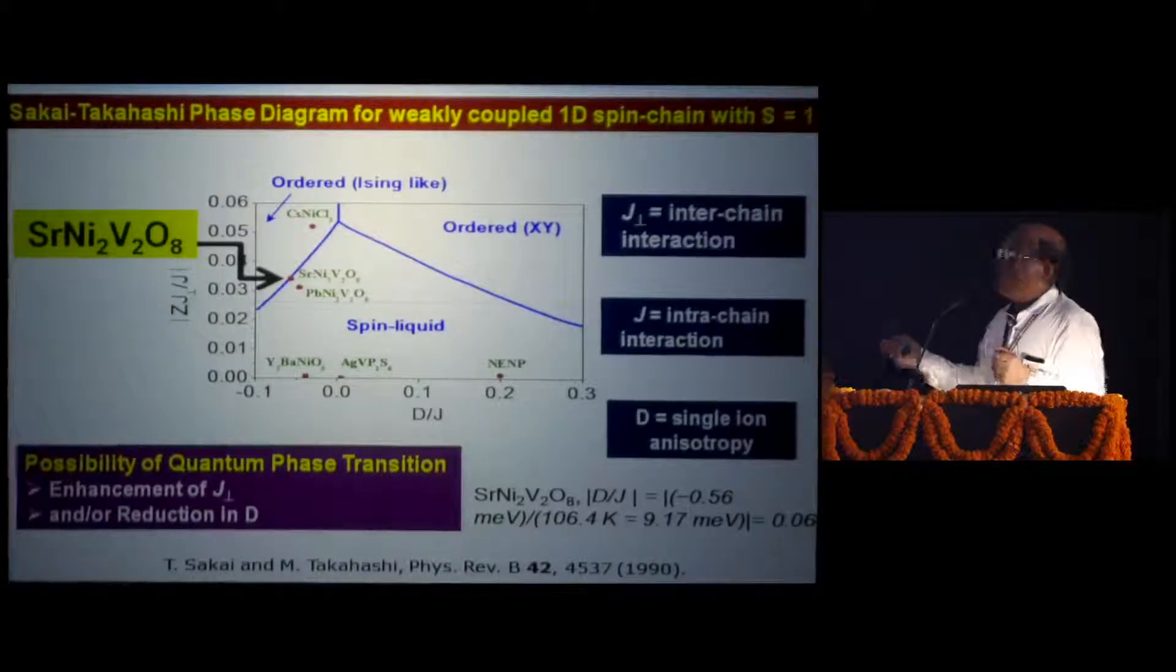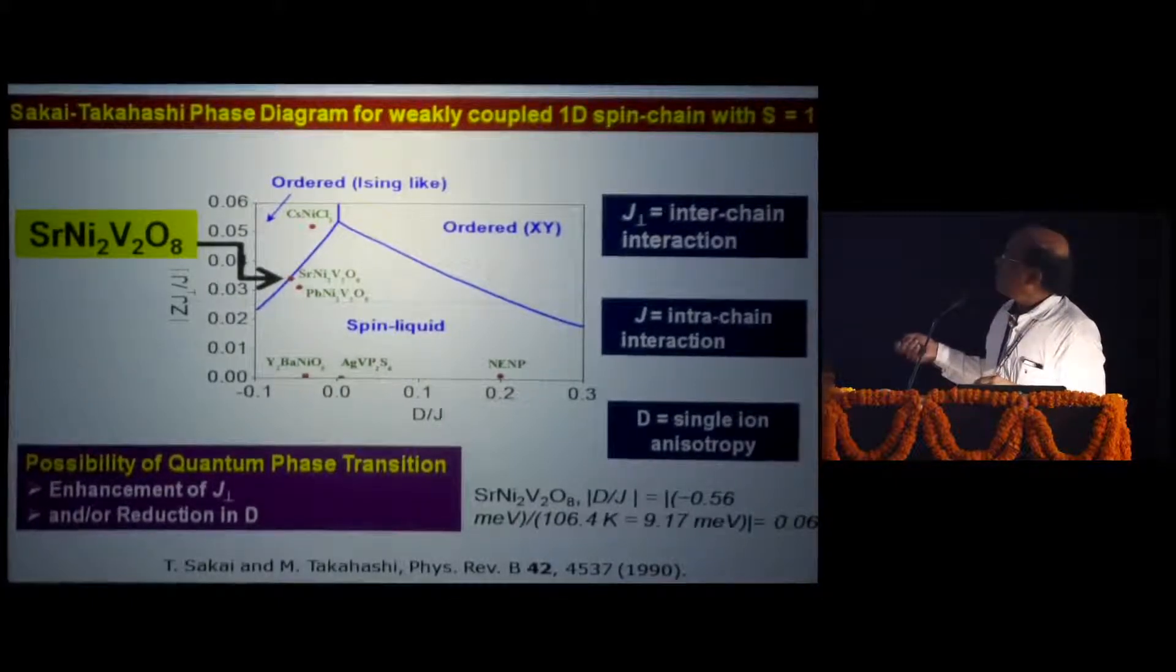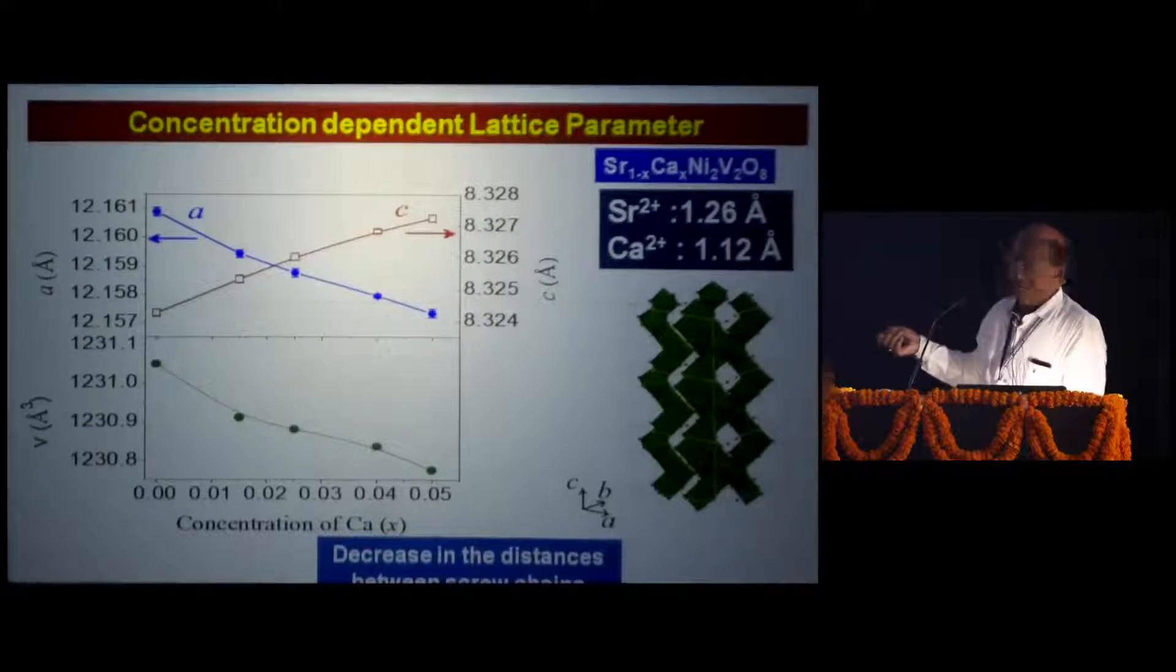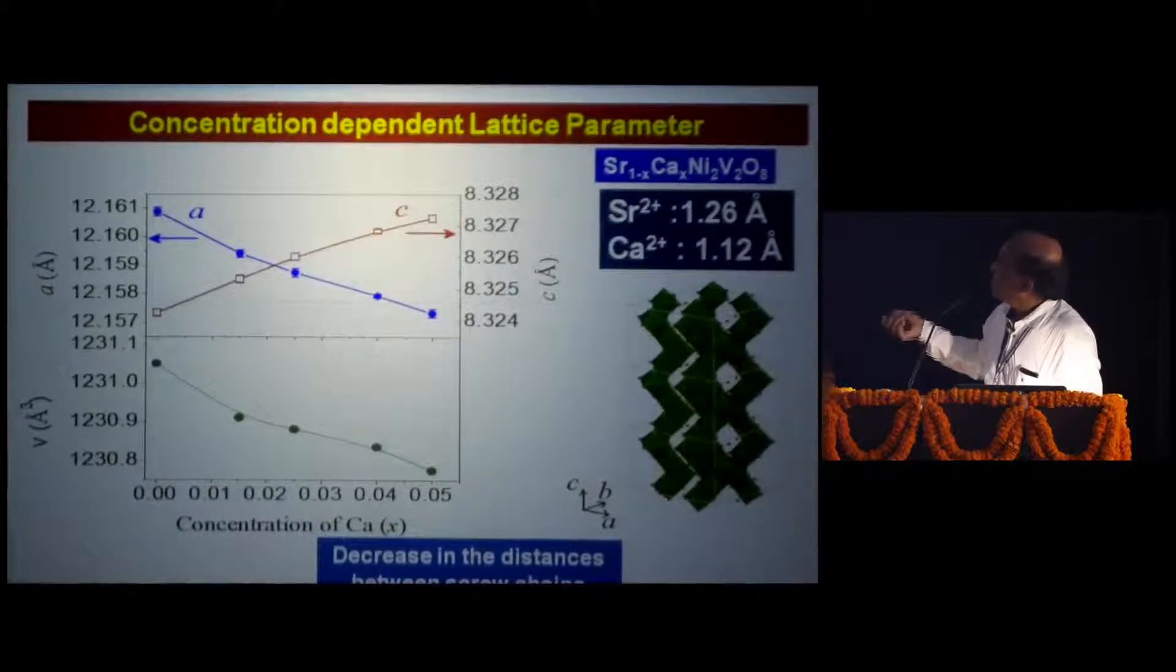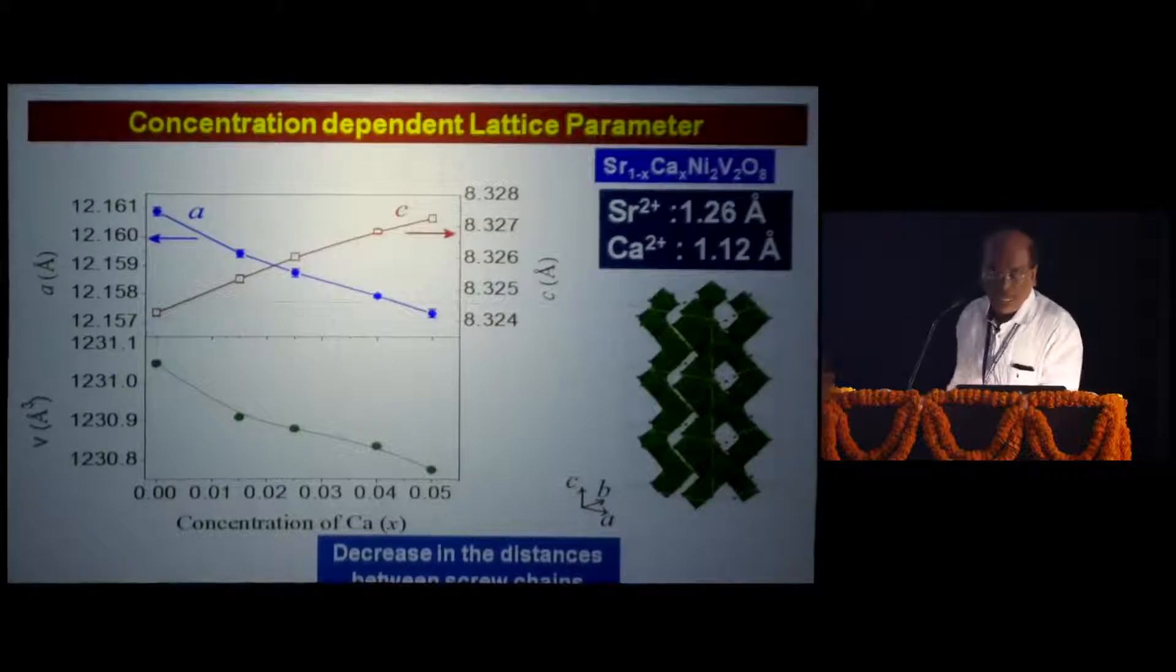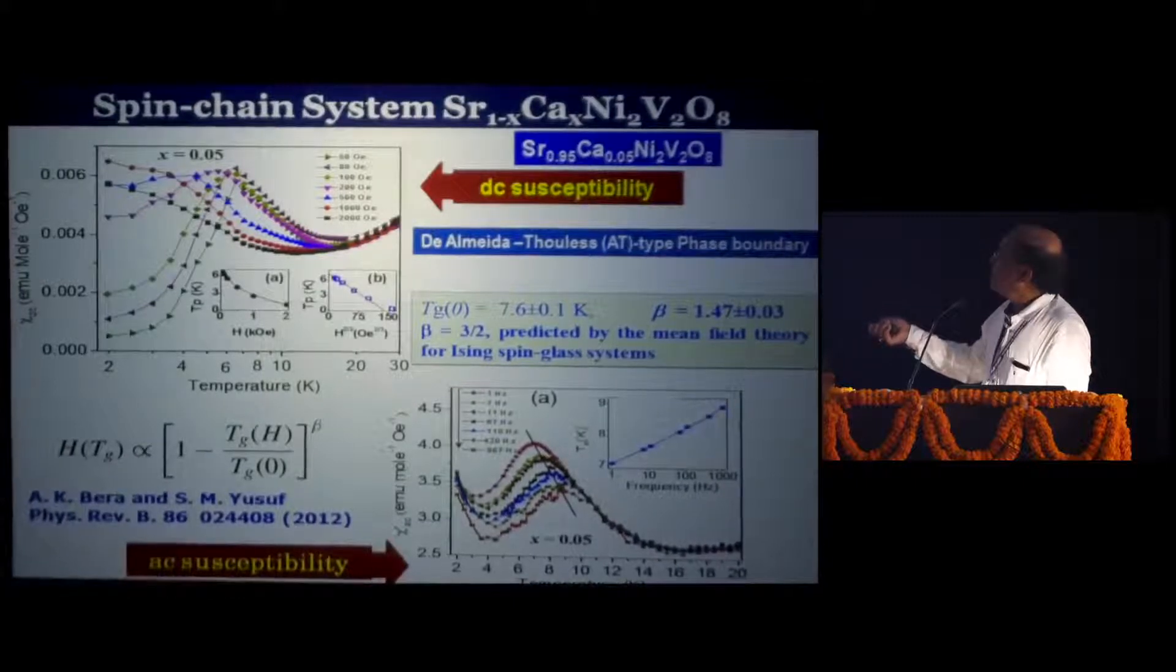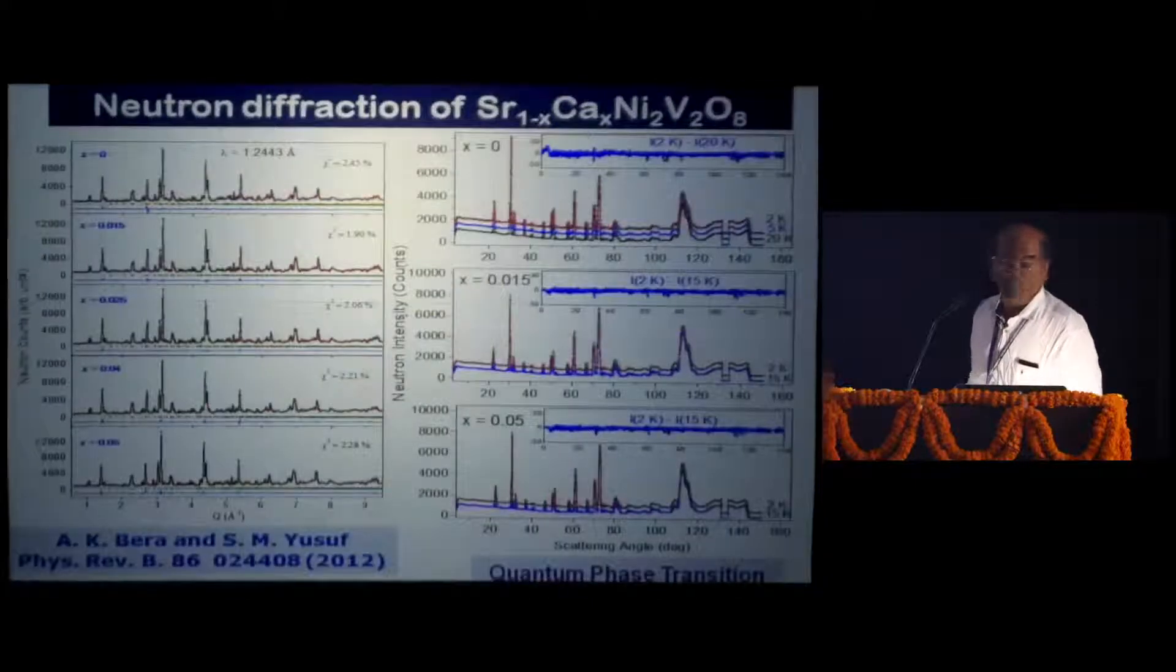Because this system, it was already given in this phase diagram, our system is in the spin liquid state but very close to this phase boundary line. Our intention was to move the system from this spin liquid state to the ordered state by some external perturbation. In this case, what is the perturbation we introduced? We replaced the strontium, two larger ions, versus calcium, two smaller ions. We wanted to bring these spin chains closer in order to have this J perpendicular, that is the interaction between two chains, and this is the J, the interaction along the chain between two spins. We wanted to make stronger so that we go to this phase. And that is what we could do it.